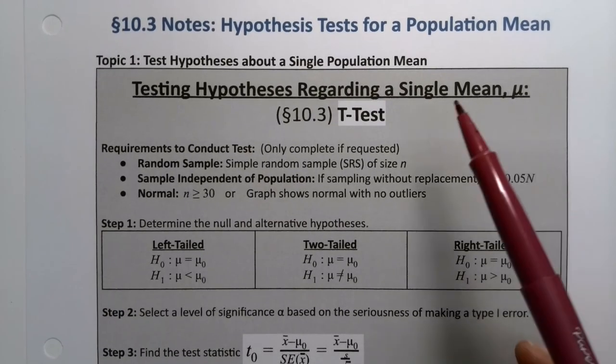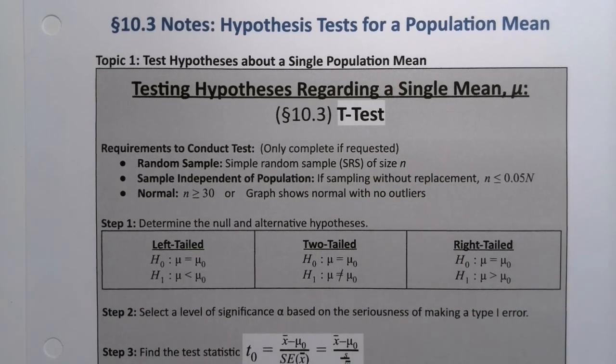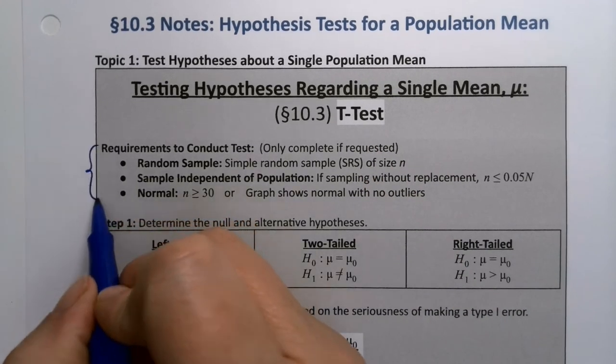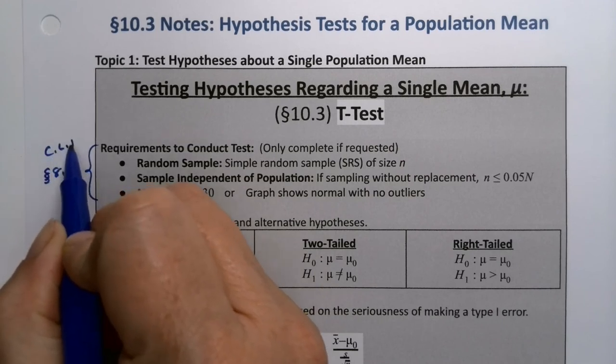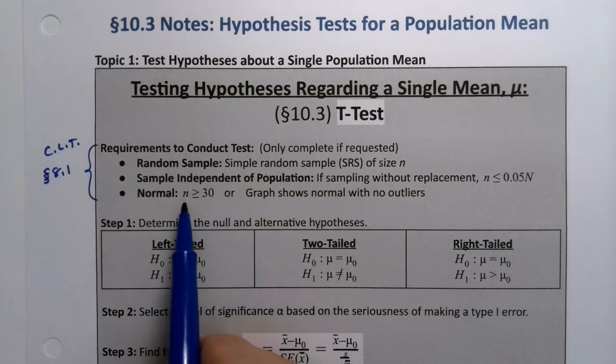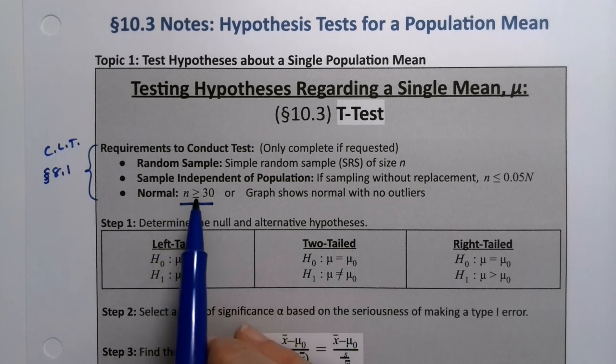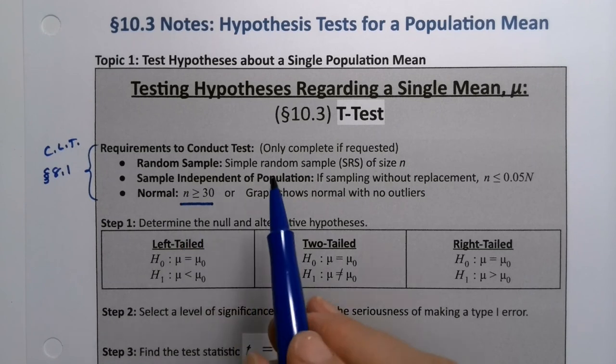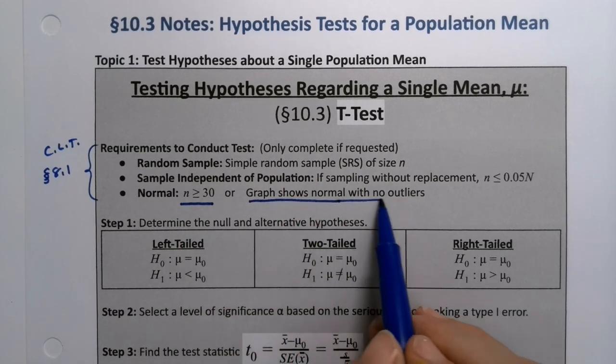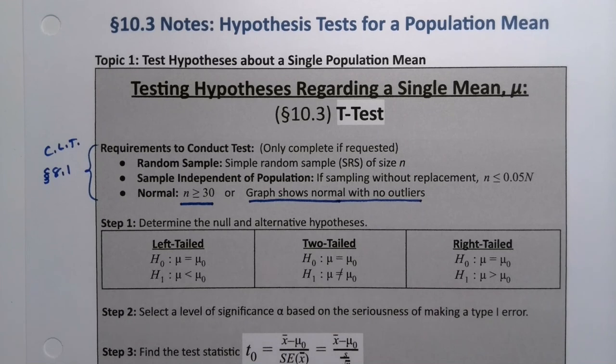So back up here in the requirements, these are the requirements that were from section 8.1. This is the central limit theorem, but for means. And the big difference, of course, is that the normal piece, instead of NPQ being greater than 10, we need N to be bigger than 30 or have a graph that shows that it's normal with no outliers. That's the big difference between the two.